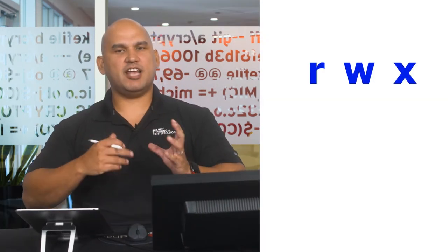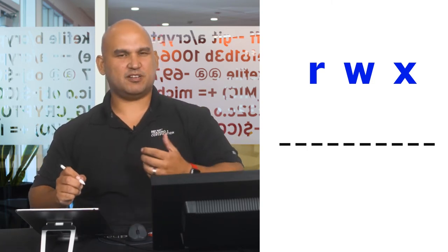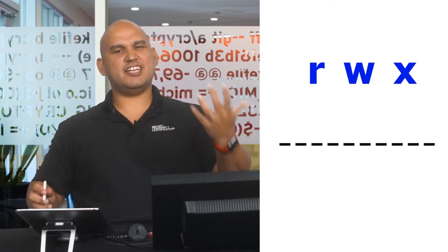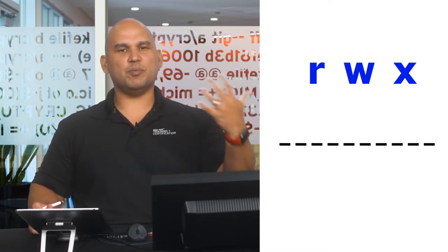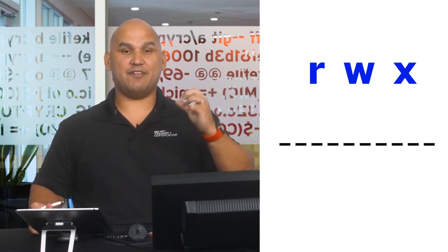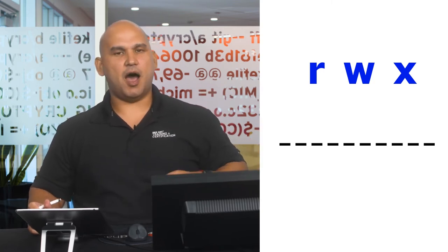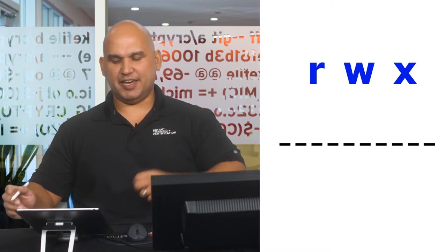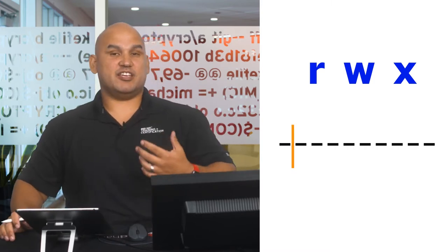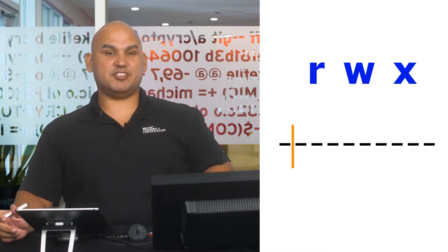Every file has got 10 bits that are associated with it. The value of the first bit determines the kind of file. So if it's a D, it's a directory; if it's just a dash, it's a normal file; if it's a link, it would have an L for a symbolic link. If it's a block-based file, it would have a B. The remaining nine bits would be the permissions.